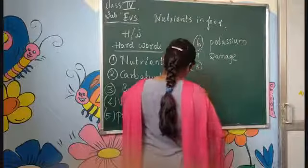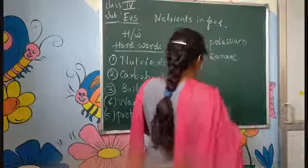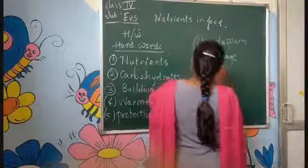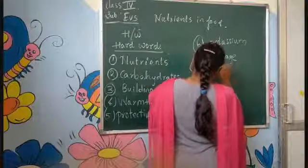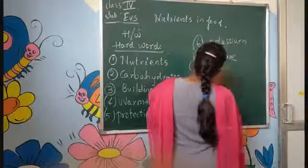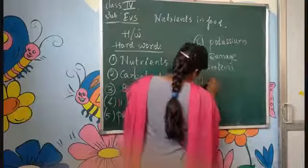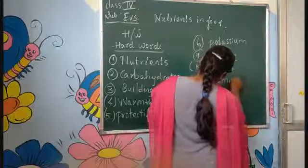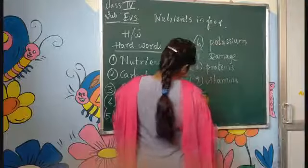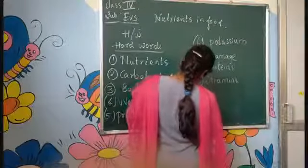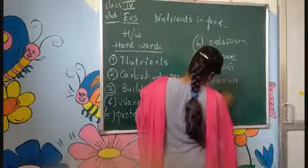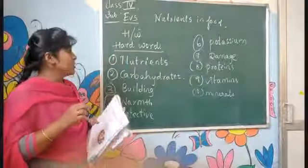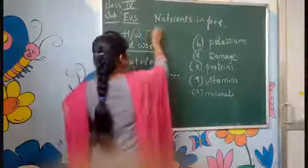Sixth one: potassium. Seventh one: damage. Eighth one: protein. Ninth one: vitamins. Tenth one: minerals. These are the ten difficult words — you have to write them 5 times.